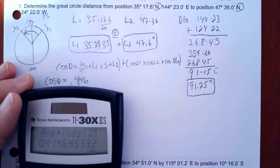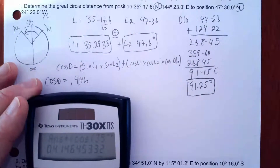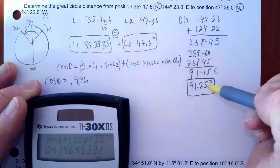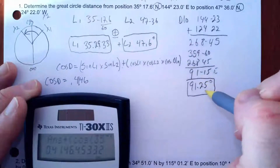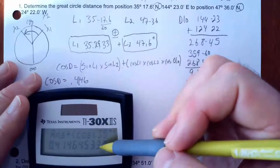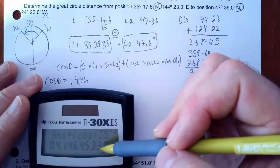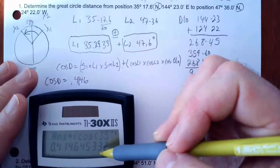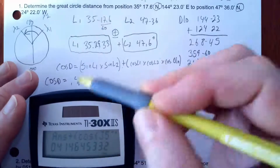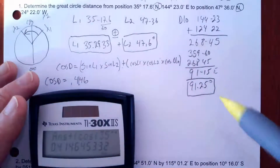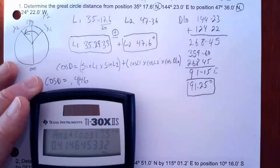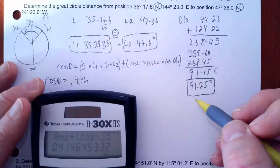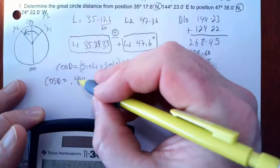On the exam, if you're using your calculator like this, you have to show me all these inputs — how you calculated them — and show me this intermediate result too. You must show your inputs. You're proving you know how to do this method, not just guessing the right answer from A, B, C, D.